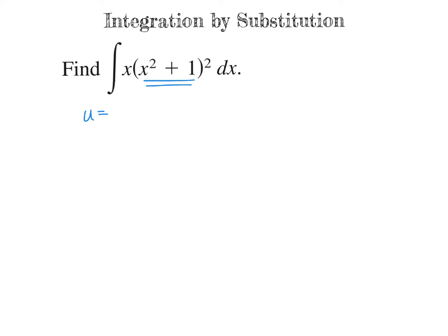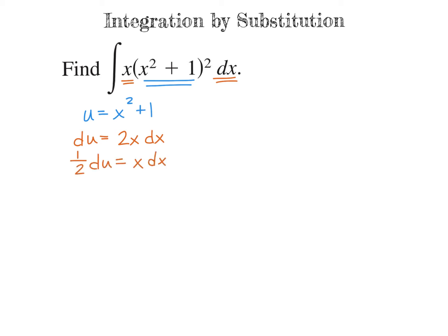The 2 is just a coefficient and we can deal with numbers out front. So let's let u equal x squared plus 1. Then we need to take the derivative of u: du equals 2x dx. We only have x dx, not 2x dx, so we divide by 2 — we'll have one-half du equals x dx. Because we have x dx here, we can replace it with one-half du. That's what I mean when we can make things work with the numerical value.